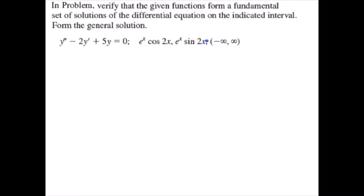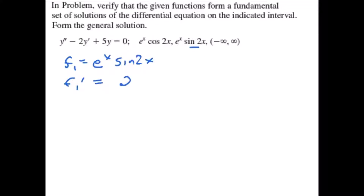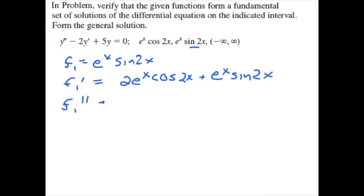We need to verify each of the functions. Let's start with f1 equals e to the x sine 2x. f1 prime equals 2e to the x cosine 2x plus e to the x sine 2x. f1 double prime equals negative 3e to the x sine 2x plus 4e to the x cosine 2x.